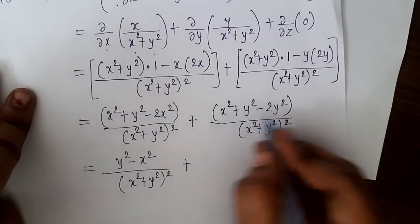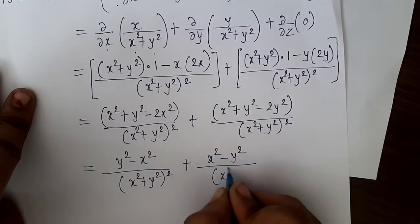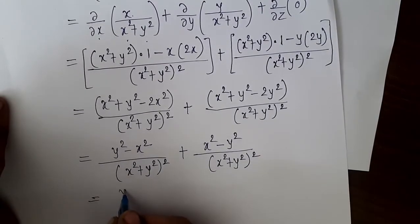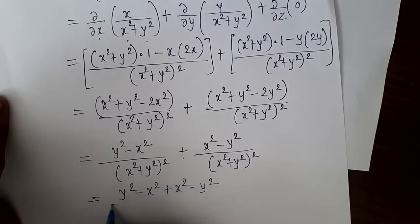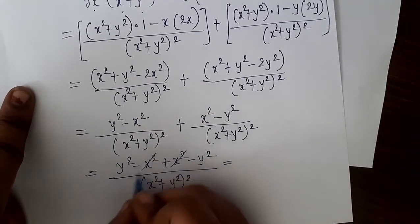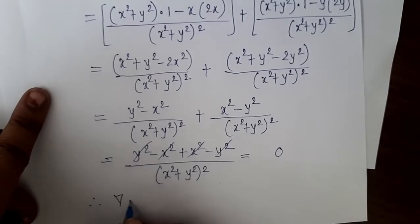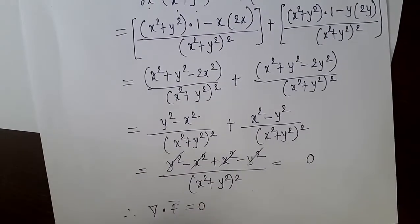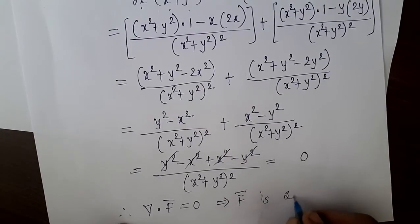The next term gives (x² - y²)/(x²+y²)². Now, since the denominators are the same, we add the numerators: (y² - x²) + (x² - y²) = 0. So del dot f equals 0, which proves that f is a solenoidal vector field.